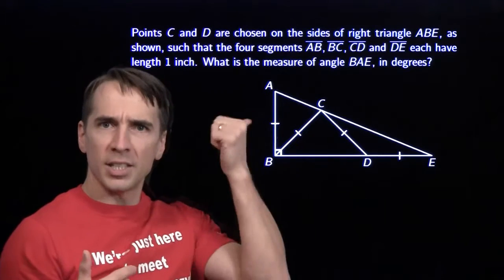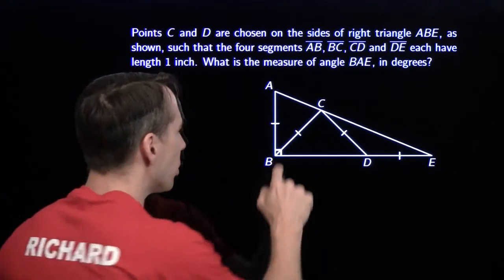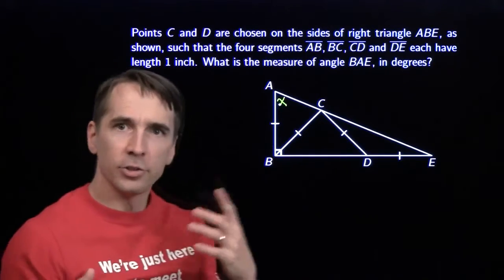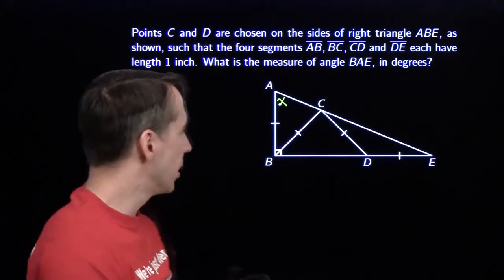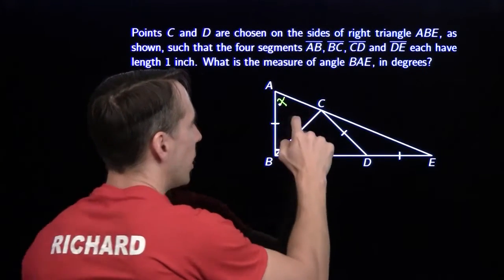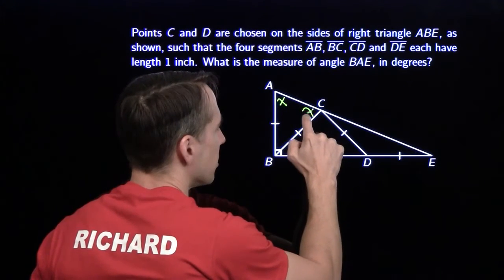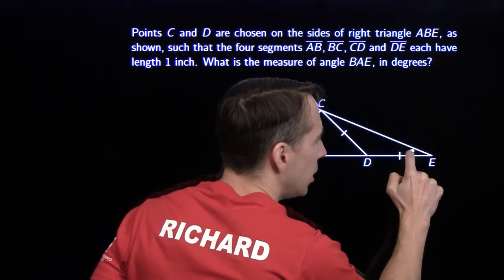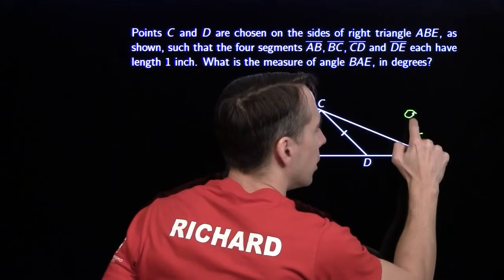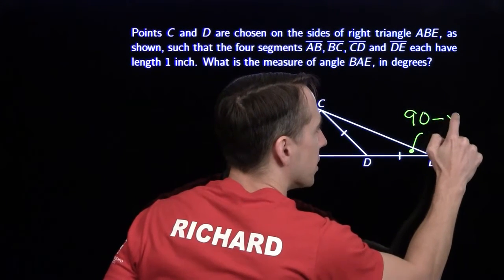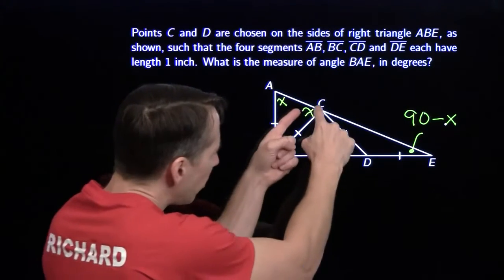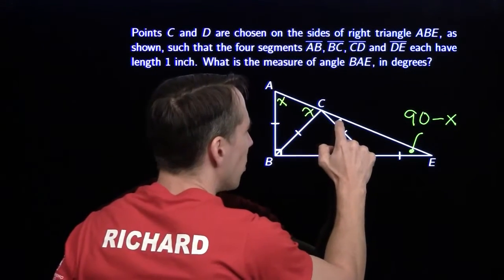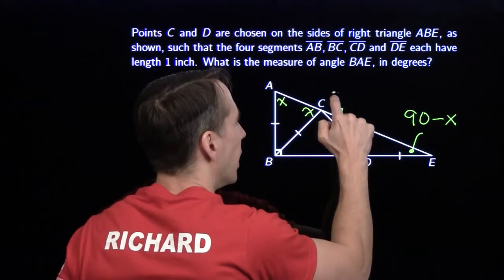Once again, we're going to assign a variable to the thing we're looking for. We're looking for this angle right here. We're going to call that x. Now let's go looking for other things we can find. We have an isosceles triangle right here that tells me that this is x. And we have the right triangle right here that tells me that this angle over here is 90 minus x. Well, I have another isosceles triangle right over here. So that tells me that that angle is also 90 minus x.